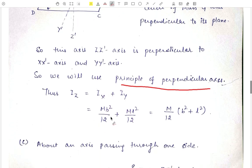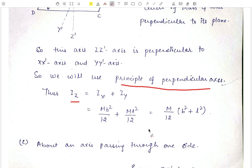The principle of perpendicular axes states that I_Z = I_X + I_Y. As we found out earlier, I_X = MB²/12 and I_Y = ML²/12. Therefore the moment of inertia I_Z will be equal to M/12 · (B² + L²). This is the required moment of inertia about the axis perpendicular to the plane through the center of mass.